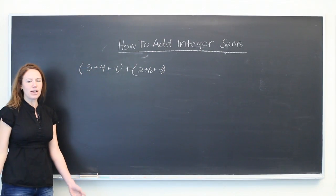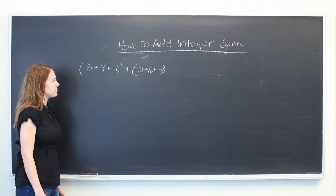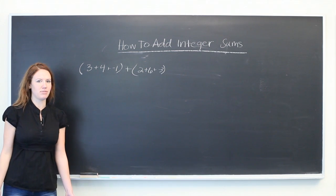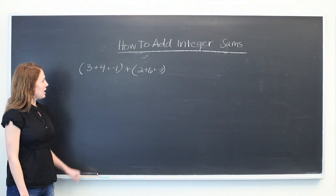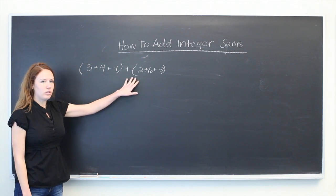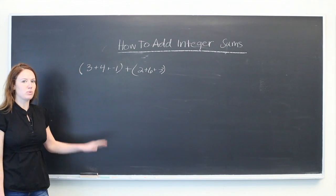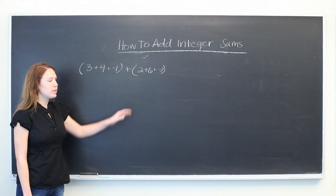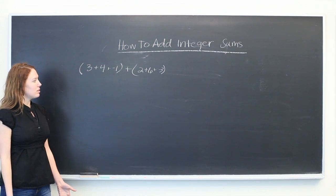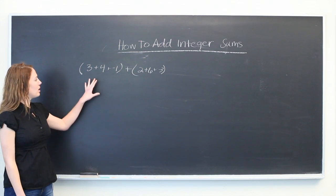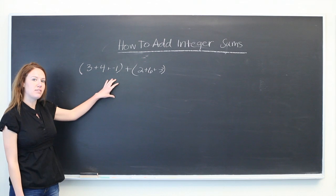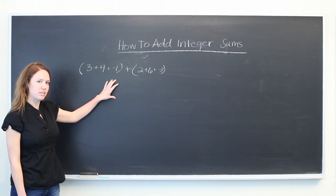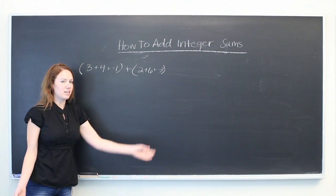There are several strategies for doing this, but one that I find fairly useful is since you're adding, you can use the commutative property, which means you can rearrange the order. I like to group the values as one set of all positive integers in parentheses added with all the negative ones.